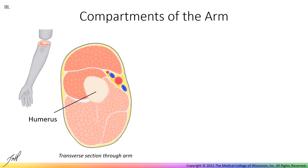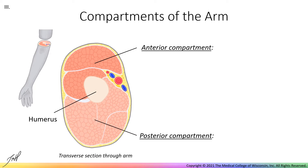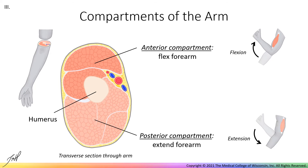In the limbs, muscles are separated into compartments by sheets of connective tissue. The arm contains two muscle compartments, the anterior and posterior compartments. Muscles in the anterior compartment work together to flex the forearm at the elbow, while those in the posterior compartment extend the forearm at the elbow. A large neurovascular bundle containing the brachial artery and branches of the brachial plexus runs in the groove between the compartments on the medial portion of the arm.